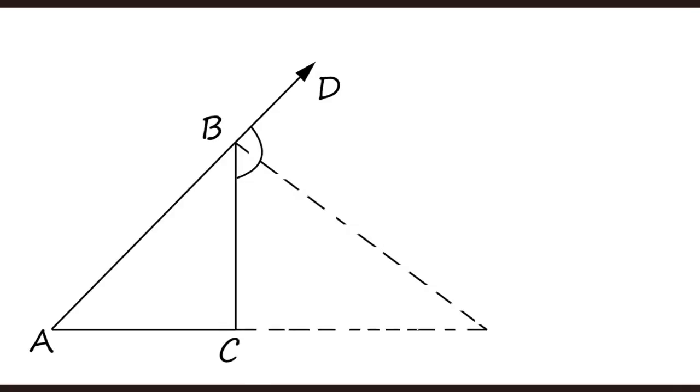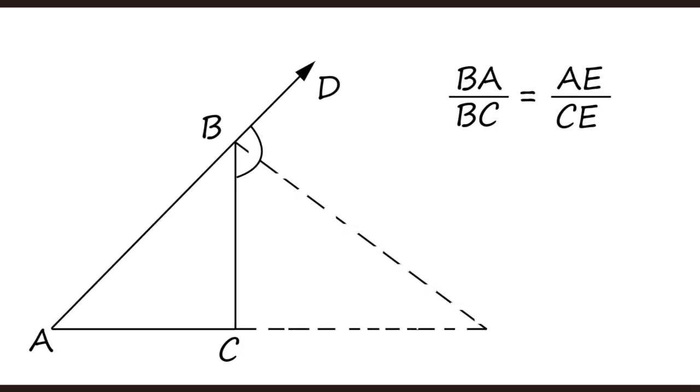Now there is also an external angle bisector. Let us say triangle ABC. Now at angle B we have extended the line so that becomes an external angle. If we have an external angle bisector which is joining AC at E, then BA upon BC will be equal to AE upon CE. That is how an external angle bisector works.